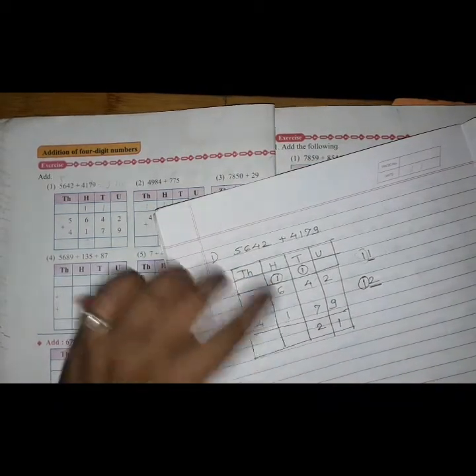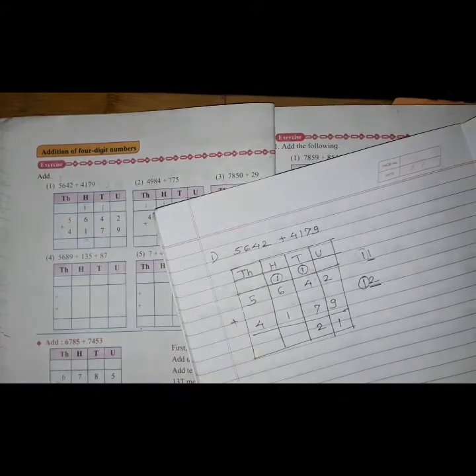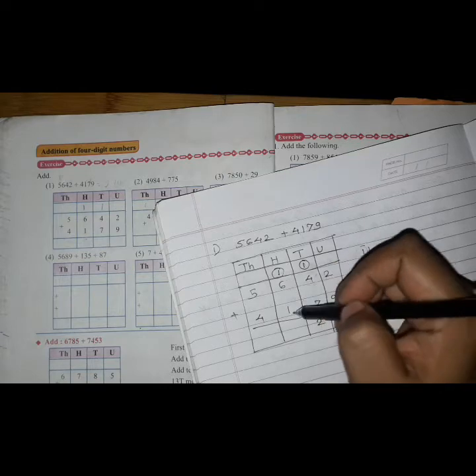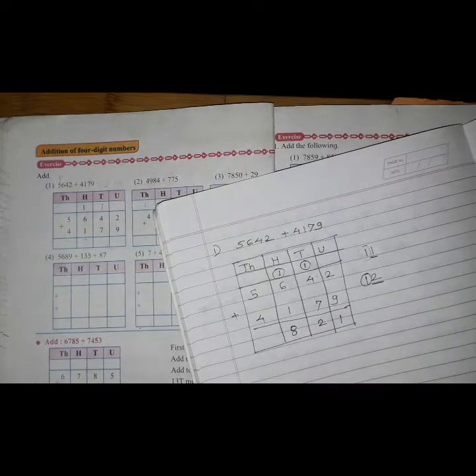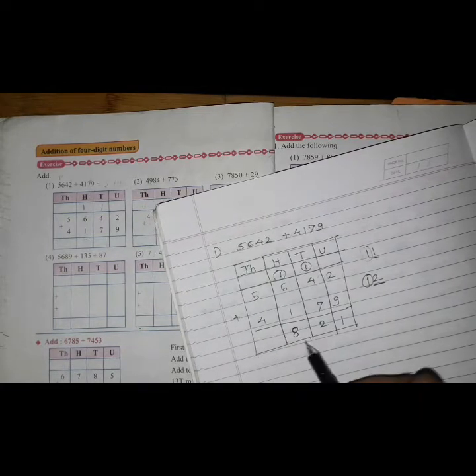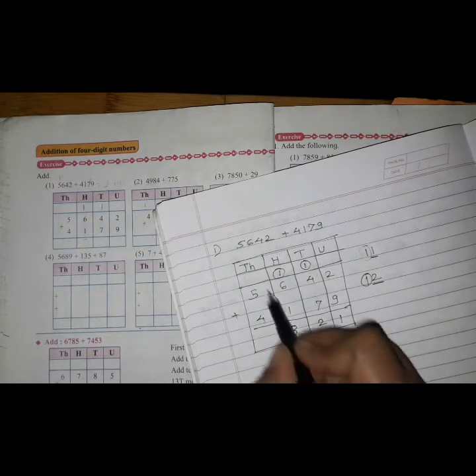Now all these 3 numbers at hundreds place: add 1 plus 6 plus 1, which equals 8. So we will write 8 here. There is no tens to carry.